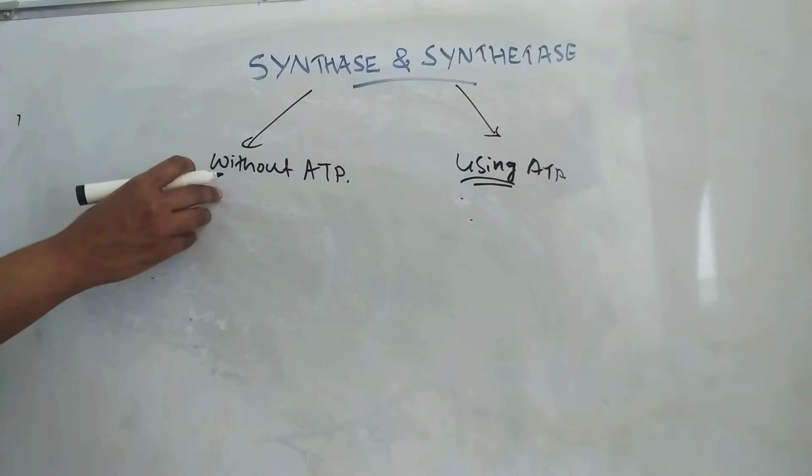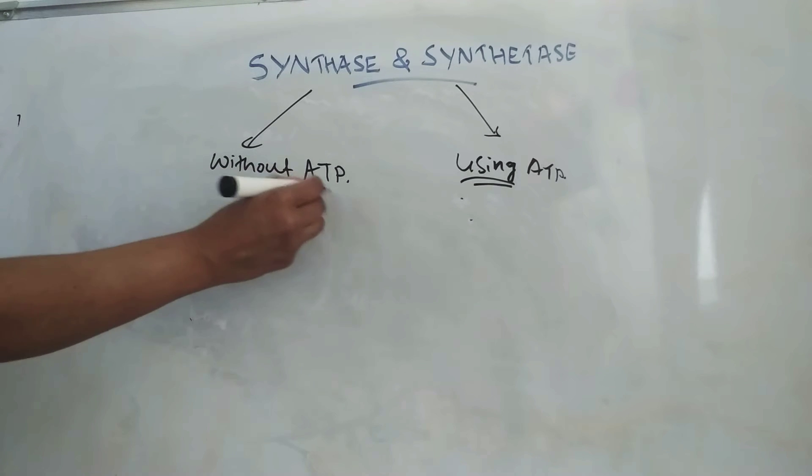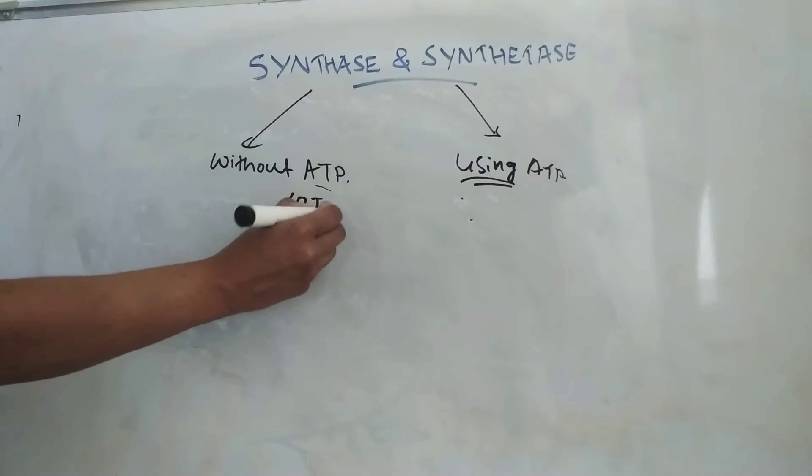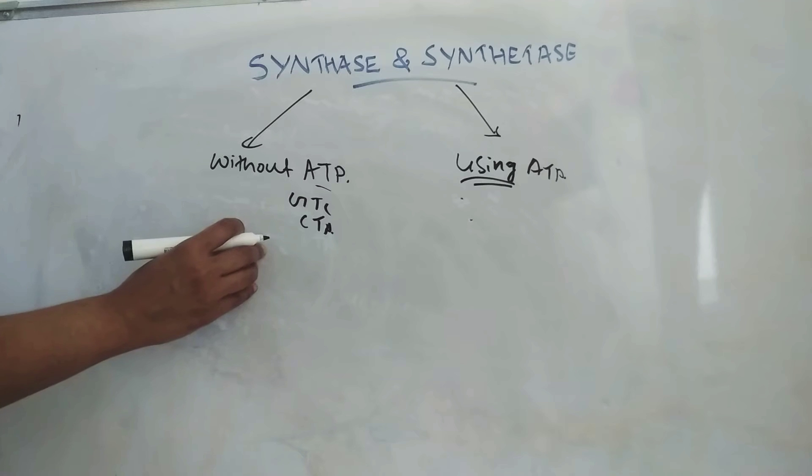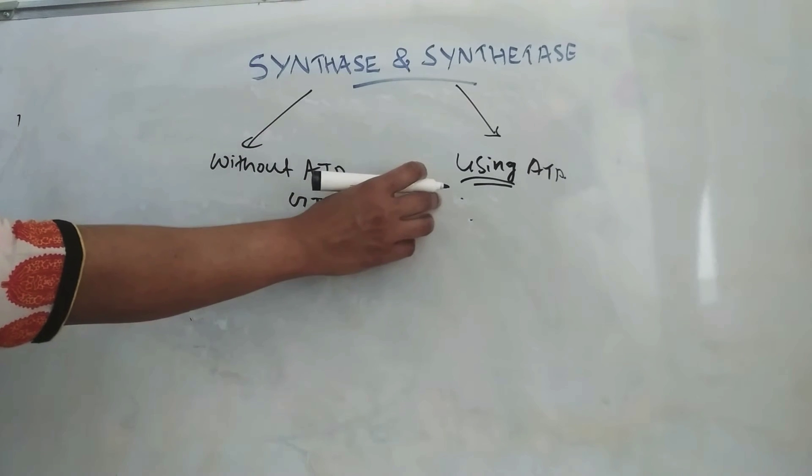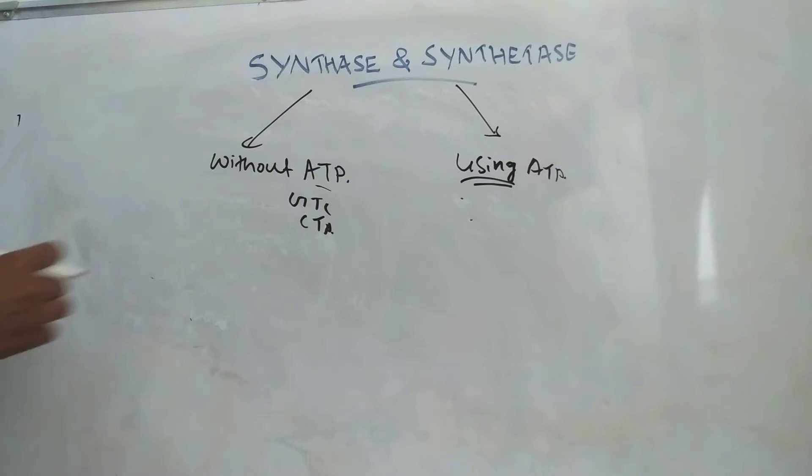Synthases do not use energy from nucleoside triphosphates such as ATP, GTP, CTP, etc. But synthetases will use energy from these nucleoside triphosphates.